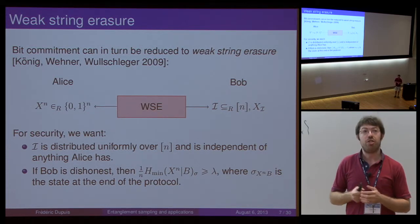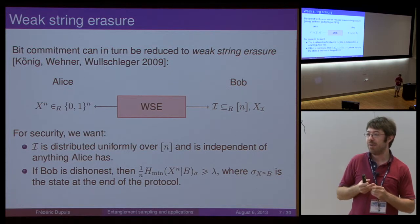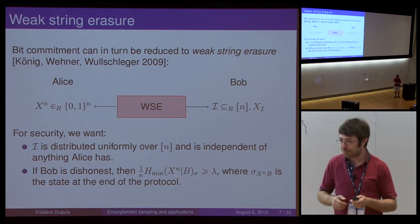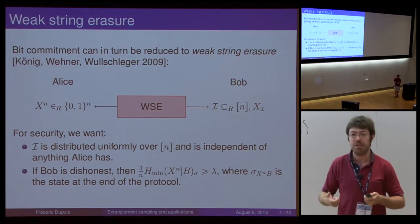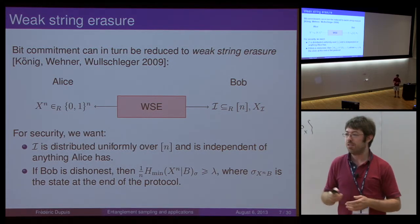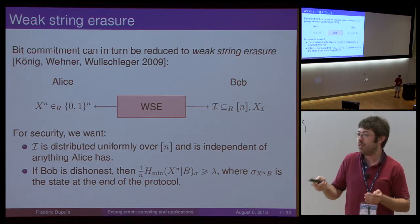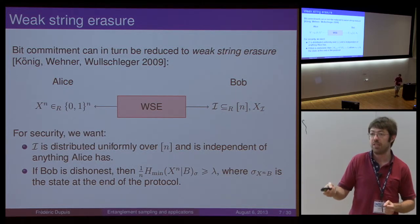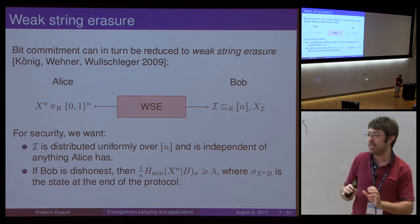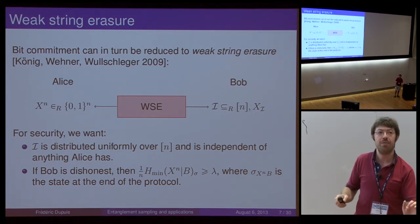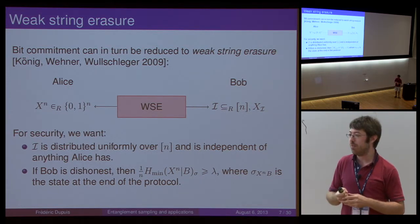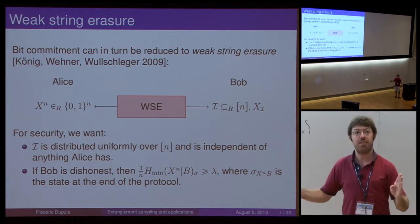One approach to design protocols in this model is by going through another task called weak string erasure. If you have a protocol for this task, you can construct a bit commitment protocol from that. What you want to achieve in weak string erasure is to implement the following: Alice ends up with a random string x_n at her end — she could even choose it — and Bob gets some subset of the n positions, chosen at random, and the value of x at those positions.